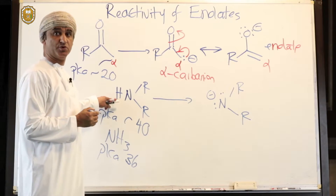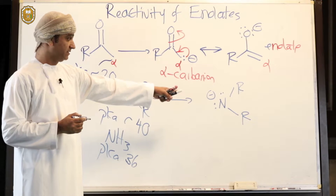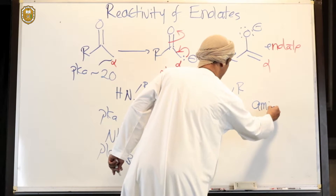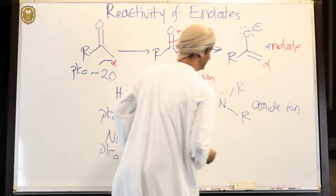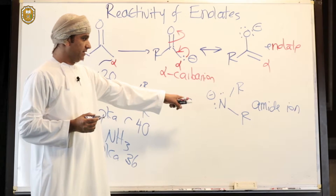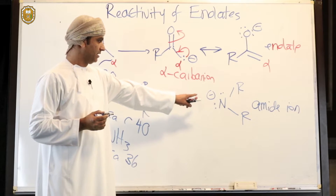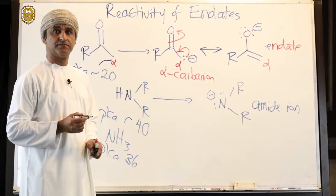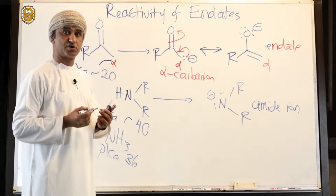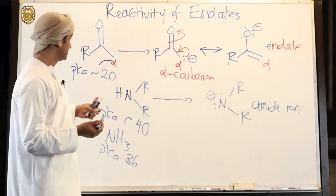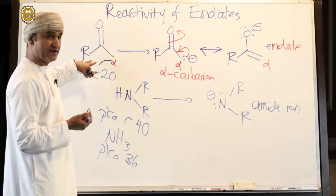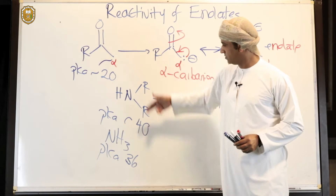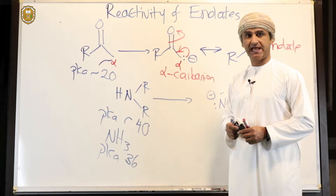If that hydrogen on the amine is removed with a suitable base, the conjugate base of the amine — called an amide — is formed. Comparing the basicity of the amide with that of the enolate, the amide is a much stronger base. The ketone has a pKa of 20 and the amine has a pKa of 40, so the amine is the weaker acid.